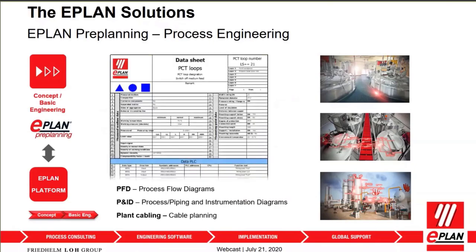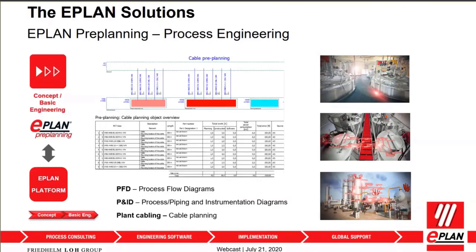You can generate documentation directly from the system, such as data sheets. If you need to order temperature, pressure, or flow sensors from a manufacturer and need to identify parameters — minimum values, maximum values, environmental considerations — all of that can be generated into a data sheet and sent to the manufacturer automatically. For cable pre-planning, you can pre-plan how many sensors are in one area of your plant and where your DCS system is, so you can plan cable routing. These topics, done early in engineering, can all be captured in ePlan preplanning.